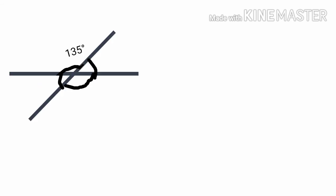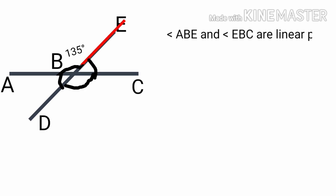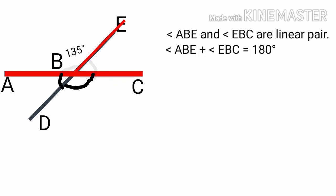Now we will mark points A, B, C, D and E. The angle ABE and the angle EBC are a linear pair. Therefore angle ABE plus angle EBC is equal to 180 degrees.